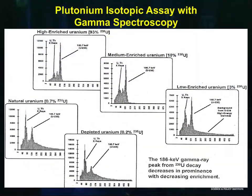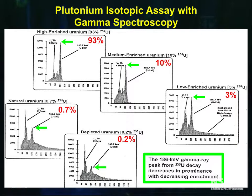The next series of spectra gives examples of uranium enrichments from 93% enriched to depleted uranium at 0.2%. Note the progression of the spectra as the isotopic composition moves from U-235 dominated to U-238 dominated at 0.2% U-235. The uranium 235 line at 186 keV is almost gone. We can do the same thing with plutonium.